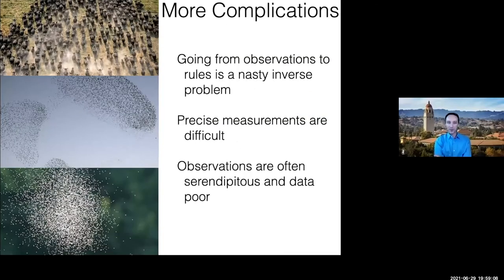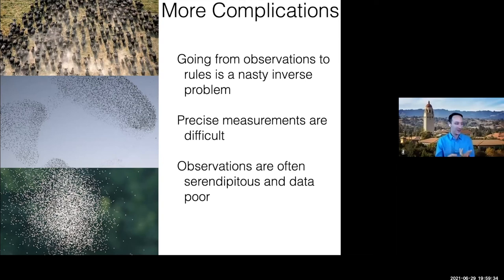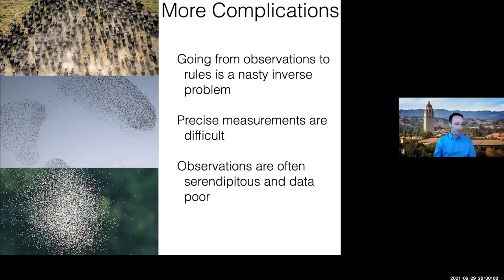That leads to problems too. If you measure what happens and want to extract why, that's an inverse problem — generically difficult, and this is a nonlinear inverse problem involving interaction, which is typically not solvable. Making precise measurements with animals is really difficult. When we do go outside and measure animals, it's serendipitous: if I put out cameras to look at birds, I see birds that come by when they feel like it, doing whatever they feel like — I can't control that. Many days I get nothing at all. So I'm often data poor.